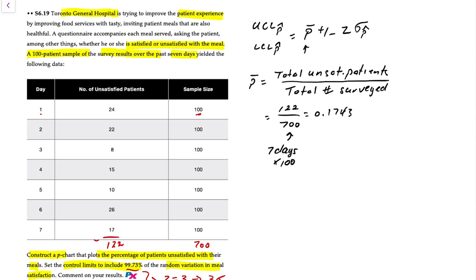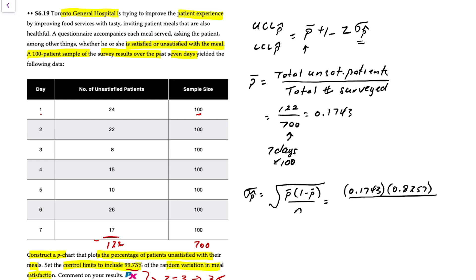The next part of the equation we need is the standard deviation of the sampling distribution. Sigma p-hat equals the square root of p-bar times 1 minus p-bar, divided by n. So we have 0.1743 times 1 minus 0.1743, which is 0.8257, divided by a sample size of 100. Taking the square root gives us a value of about 0.0379.